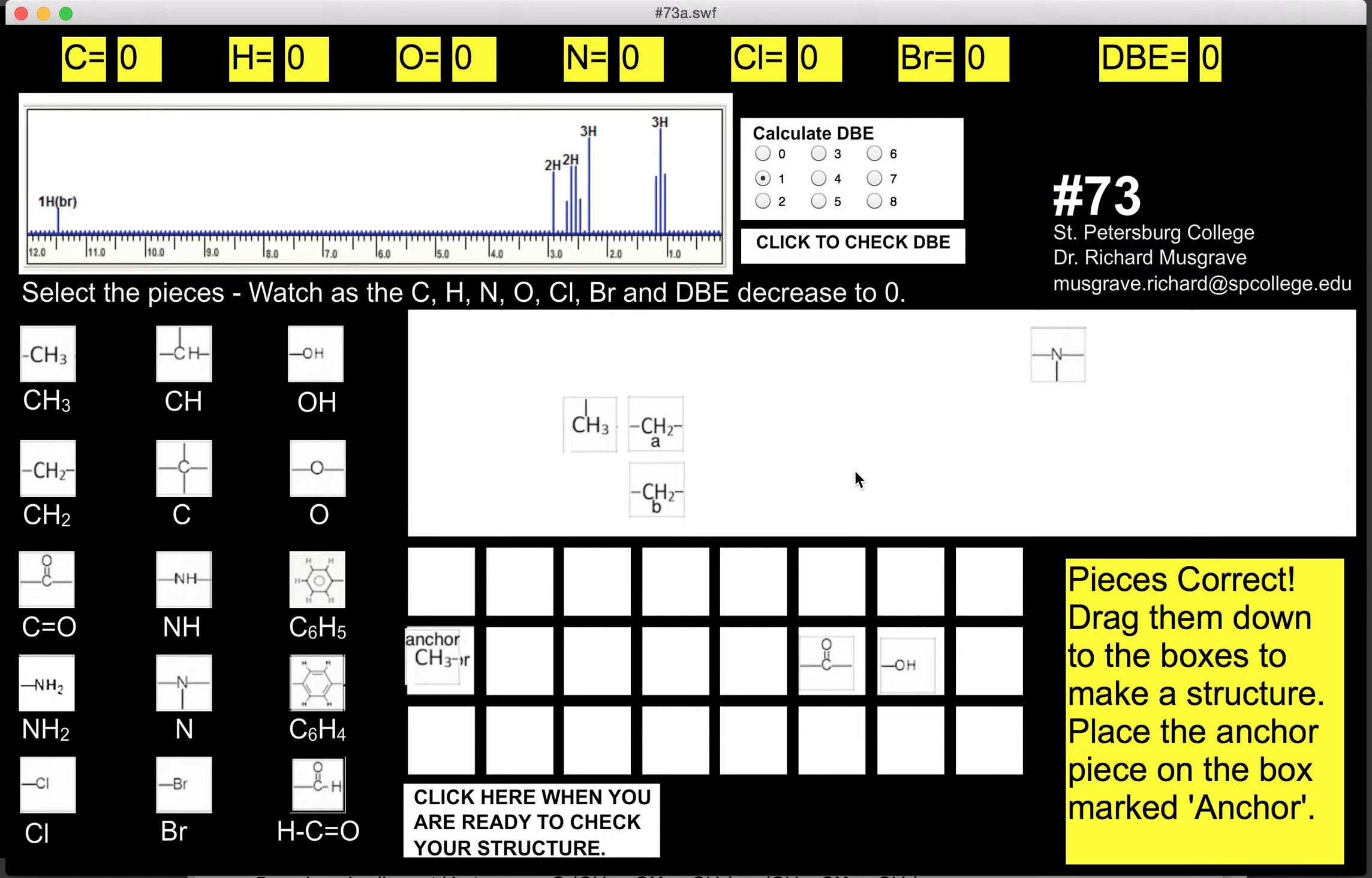Now I've got to figure out what else is connected to what. I can see that I've got a CH3 here that is connected to a CH2 because it's got three peaks, so it must have two adjacent hydrogens. I'm going to go ahead and connect this CH3 to this CH2 here.